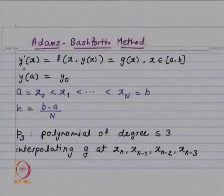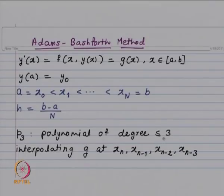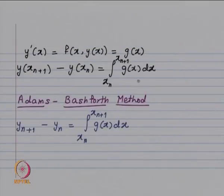This is our initial value problem: y'(x) = f(x, y(x)), x belonging to [a, b]. Initial value y(a) = y_0 is given. We look at a uniform partition of interval [a, b], dividing it into n equal parts. h is the length of the sub-interval, b minus a by n. P_3 is the polynomial of degree less than or equal to 3 interpolating our function g at x_n, x_{n-1}, x_{n-2}, x_{n-3}. The exact equation gives y(x_{n+1}) minus y(x_n) equal to the integral from x_n to x_{n+1} of g(x) dx.